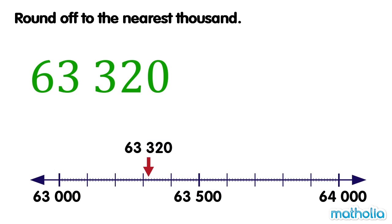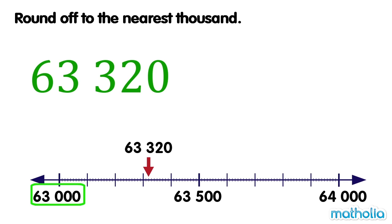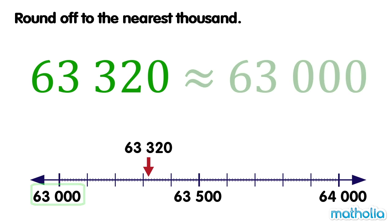So 63,320 is rounded down to 63,000. To the nearest thousand, 63,320 is approximately equal to 63,000.